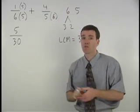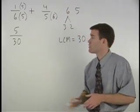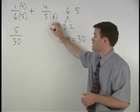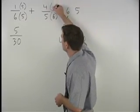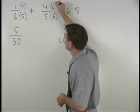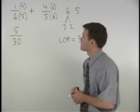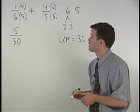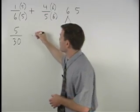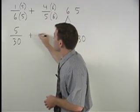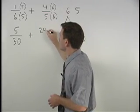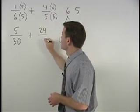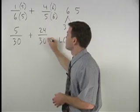And when we multiply the denominator of a fraction by six, we must also multiply the numerator by six. So we have plus 24 over 30.